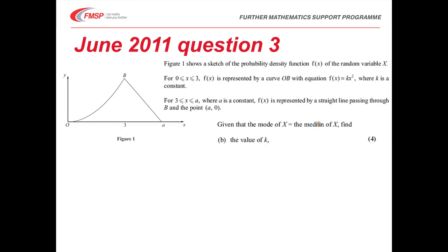We're then asked to find the value of k. We now know a lot of information. We know that the median is also equal to 3. So I know that this area here is 0.5 and this area here is 0.5. In other words, the integral from 0 to 3 of kx² dx must equal 1/2.